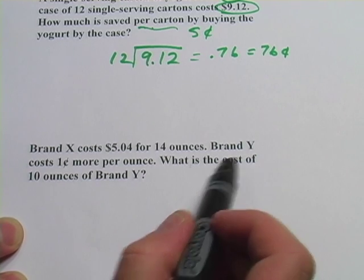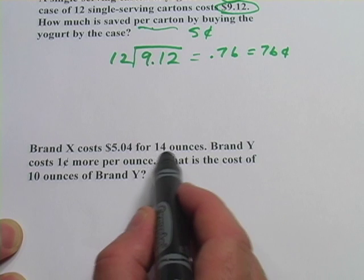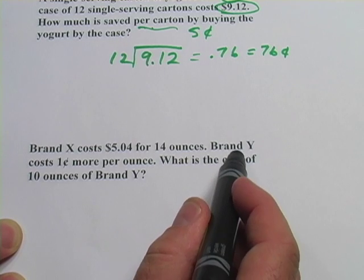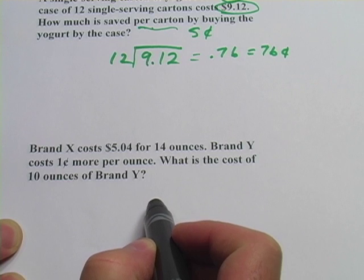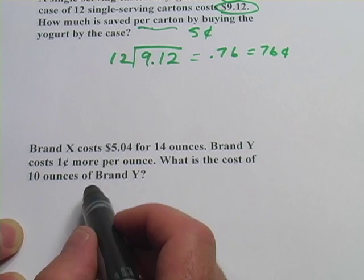All right, let's just figure out what they're asking here. We've got the cost of brand X for 14 ounces. Brand Y costs 1 cent more per ounce. What we need to figure out here is what is the cost of brand X per ounce first.